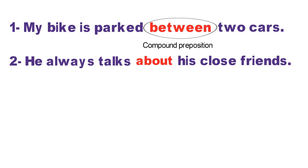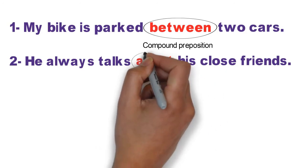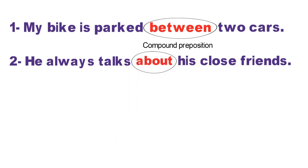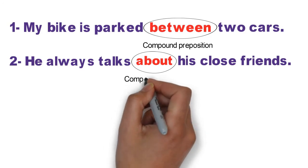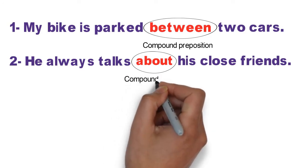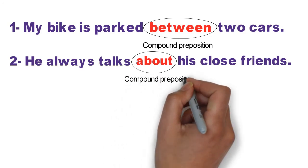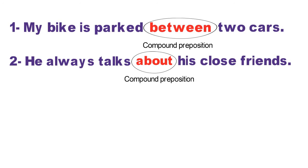Ab dekhte hain doosra sentence: He always talks about his close friends. Woh hamesha apne karebi doston ke baare mein baat karta hai. Is sentence mein humne red color word 'about' ka use kiya hai, jisko form kiya gaya hai 'A' prefix laga kar, aur yah word bhi noun ke pehle hi aaya hai, isliye yeh compound preposition hoga.